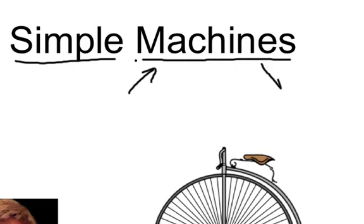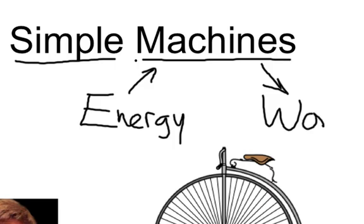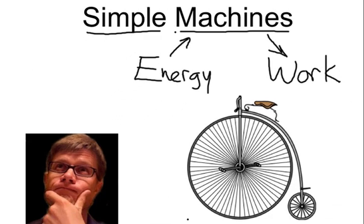Before we talk about simple machines, however, we should define what a machine is. A machine is any device that uses energy to do work. One of my favorite machines is the bicycle. It allows me to move around town very quickly when there's not too much snow on the ground.